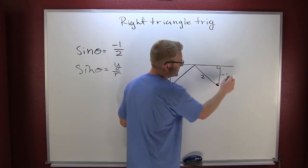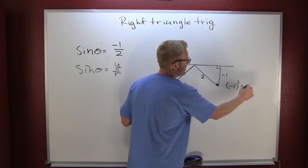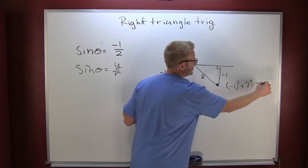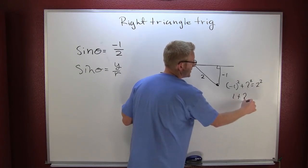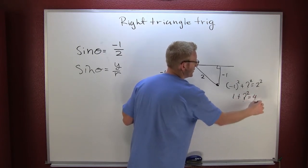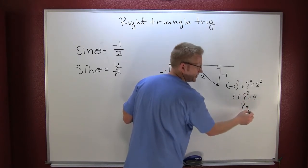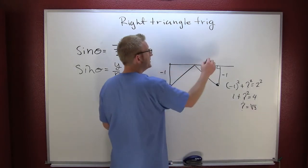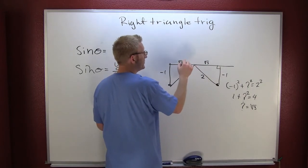You could say minus 1 squared plus question mark squared equals 2 squared. So this is 1 plus question mark squared equals 4. Question mark squared is 3, so question mark turns out to be the square root of 3. So that one's going to be root 3 and this one's going to be root 3.